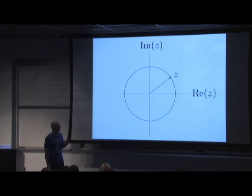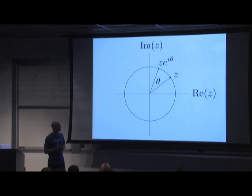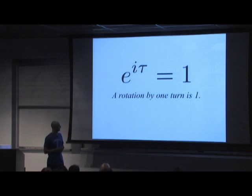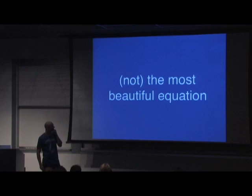There's another way to think about this. In the complex plane, multiplication by e^{iθ} is equivalent to rotating a number by angle θ. So e^{iτ} = 1 means a rotation by one full turn is one — and since one is the multiplicative identity, rotating a number through a full turn returns it to where it was before.